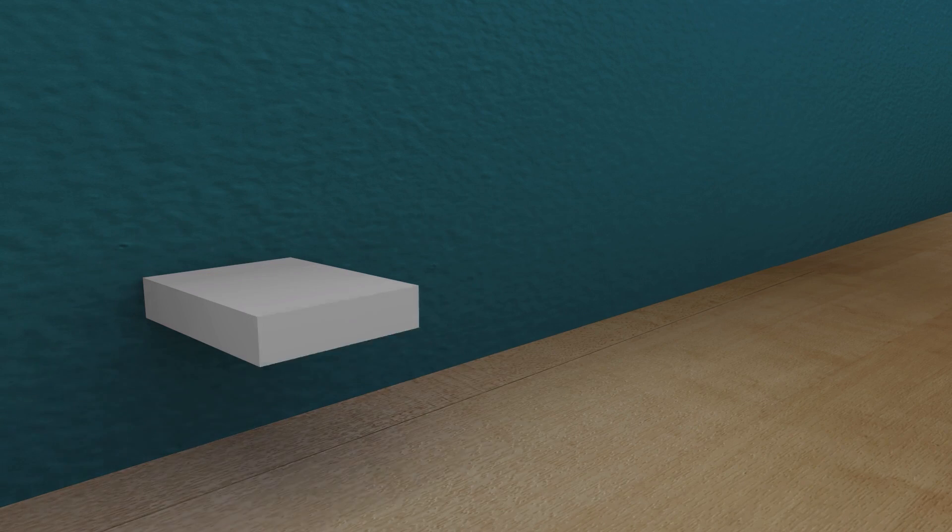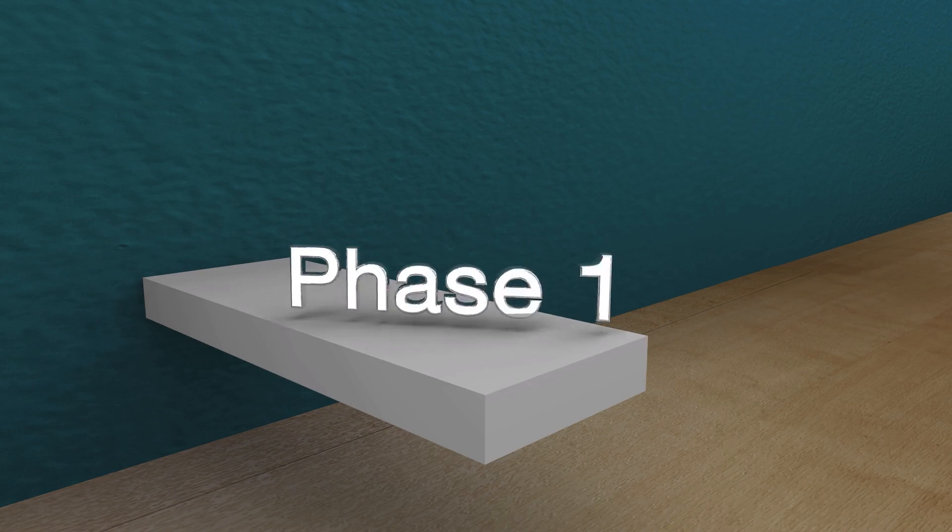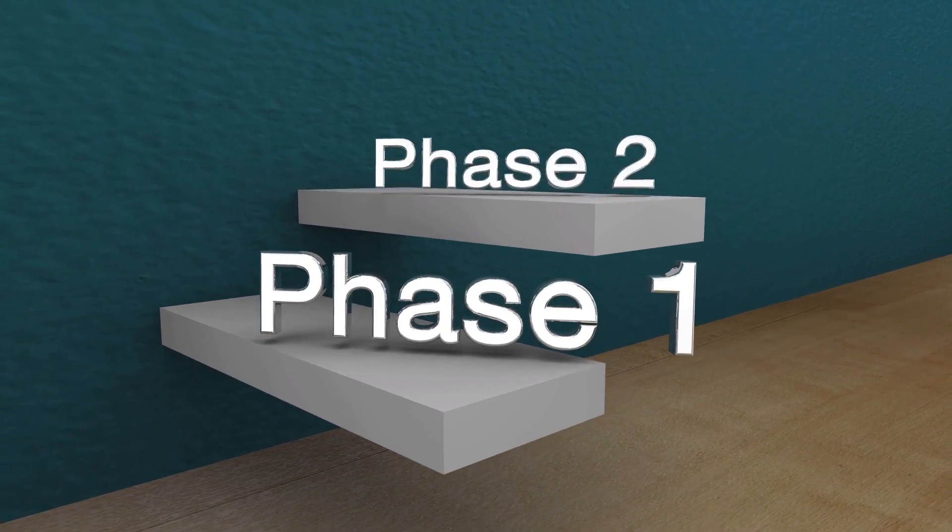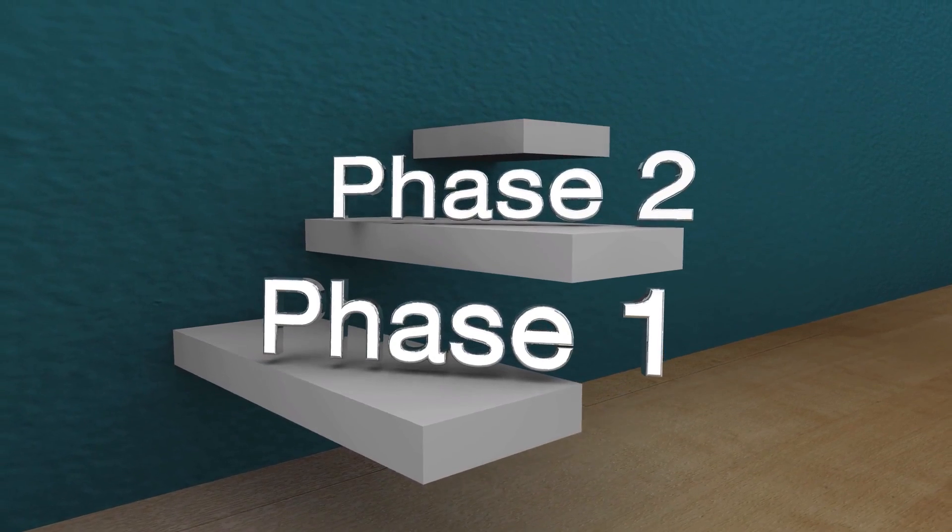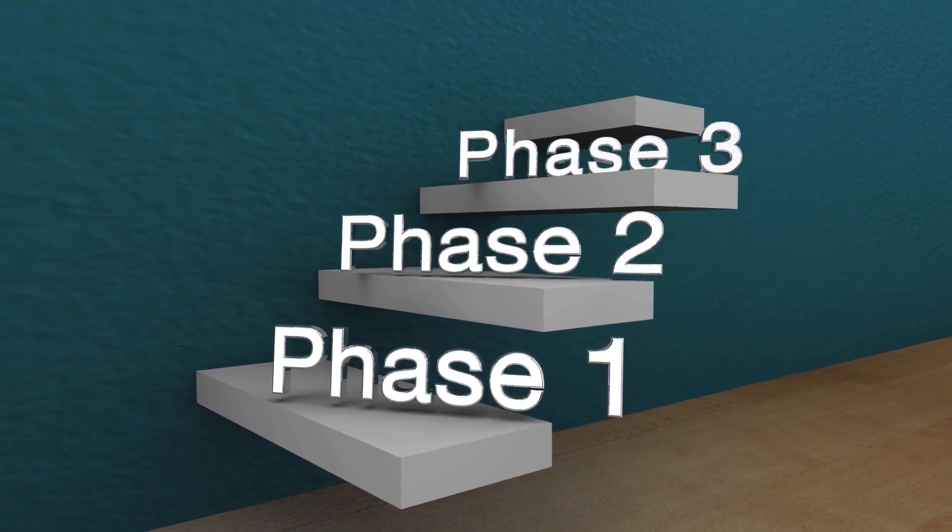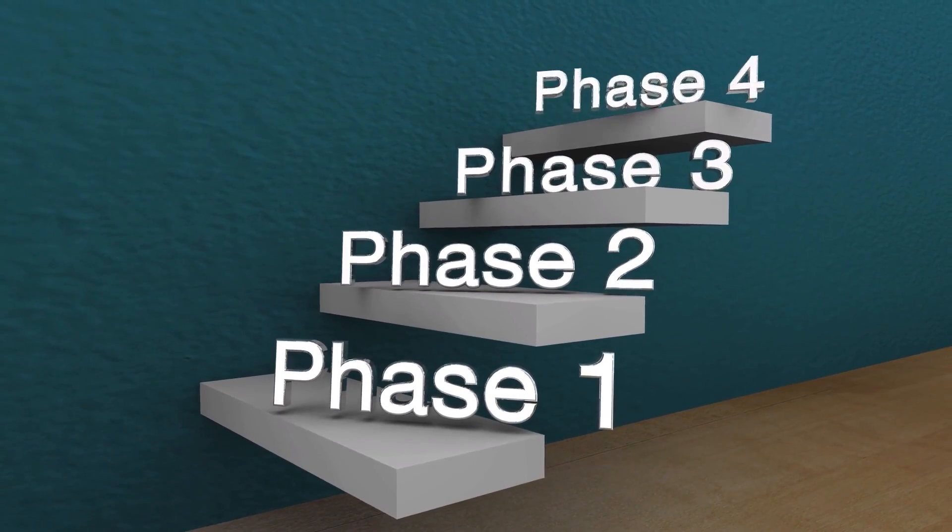The first group received 20 grams of garlic daily plus one tablespoon of lemon juice. The second group received 20 grams of garlic daily by itself. And the third group received one tablespoon of lemon juice daily. And the fourth group did not receive garlic or lemon juice.